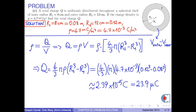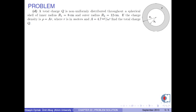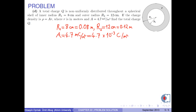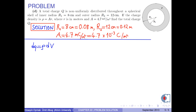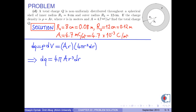This is the answer to part C. Let us solve part D. A total charge Q is non-uniformly distributed throughout a spherical shell of inner radius r1 equal to 8 cm and outer radius r2 equal to 12 cm. If the charge density is rho equal to A times r, where r is in meters and A is 4.7 mC per m⁴, find the total charge Q. dQ is found by the formula rho times dV, where rho is A times r and dV is 4π r² dr, giving 4π times A times r cubed dr.